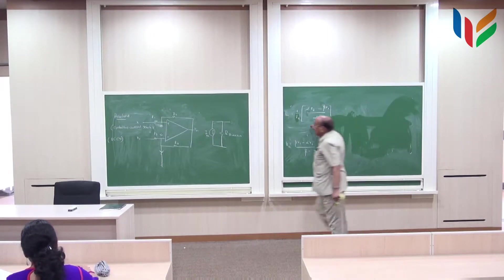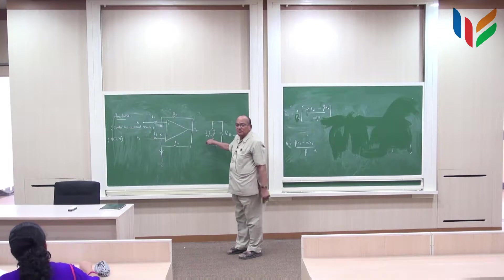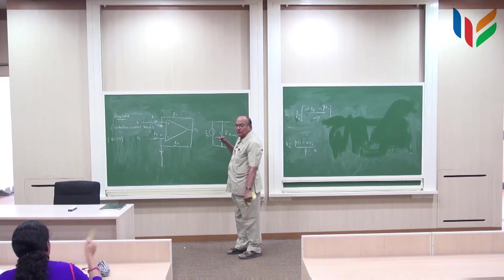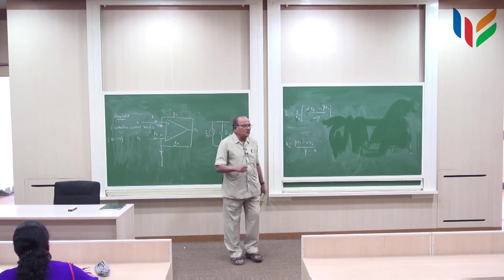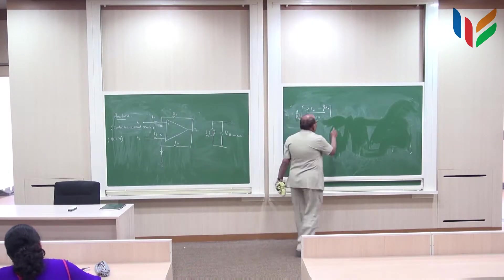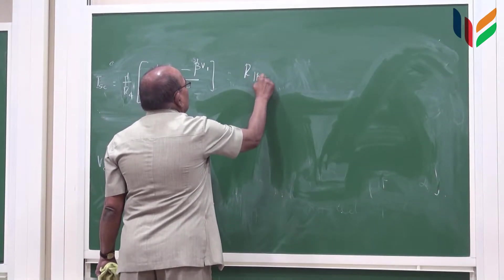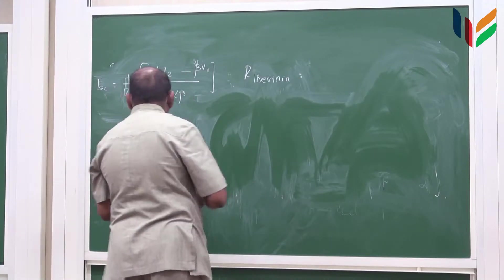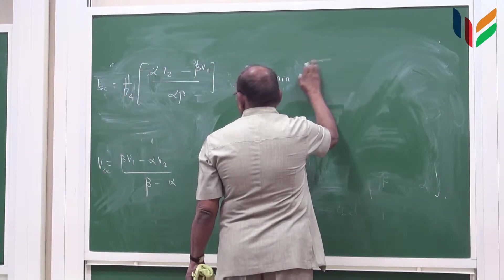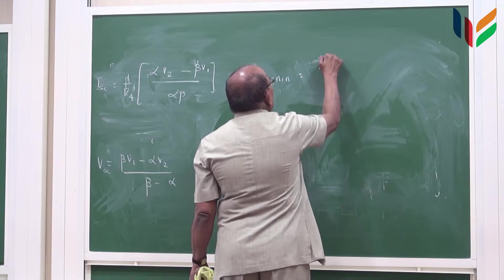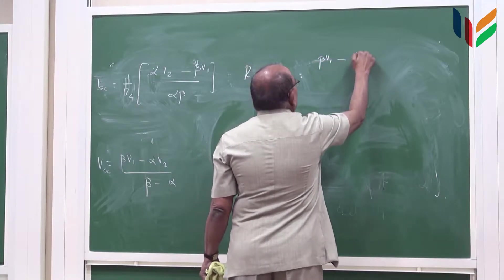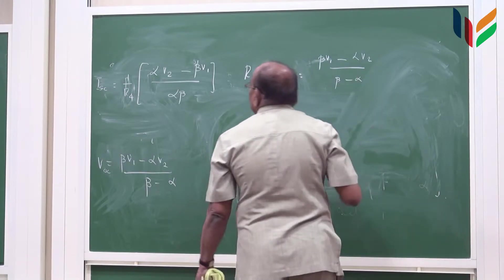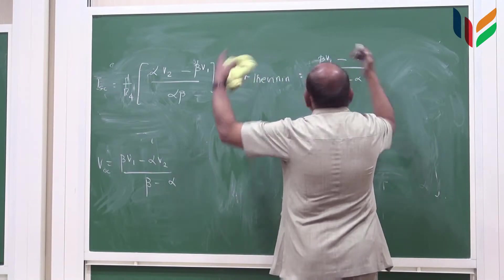So this is the current in the Norton Equivalent and the resistance here, which is the Thevenin Equivalent, is the ratio VOC by ISC. So R Thevenin is equal to minus beta V1 minus alpha V2 divided by beta minus alpha into R4.